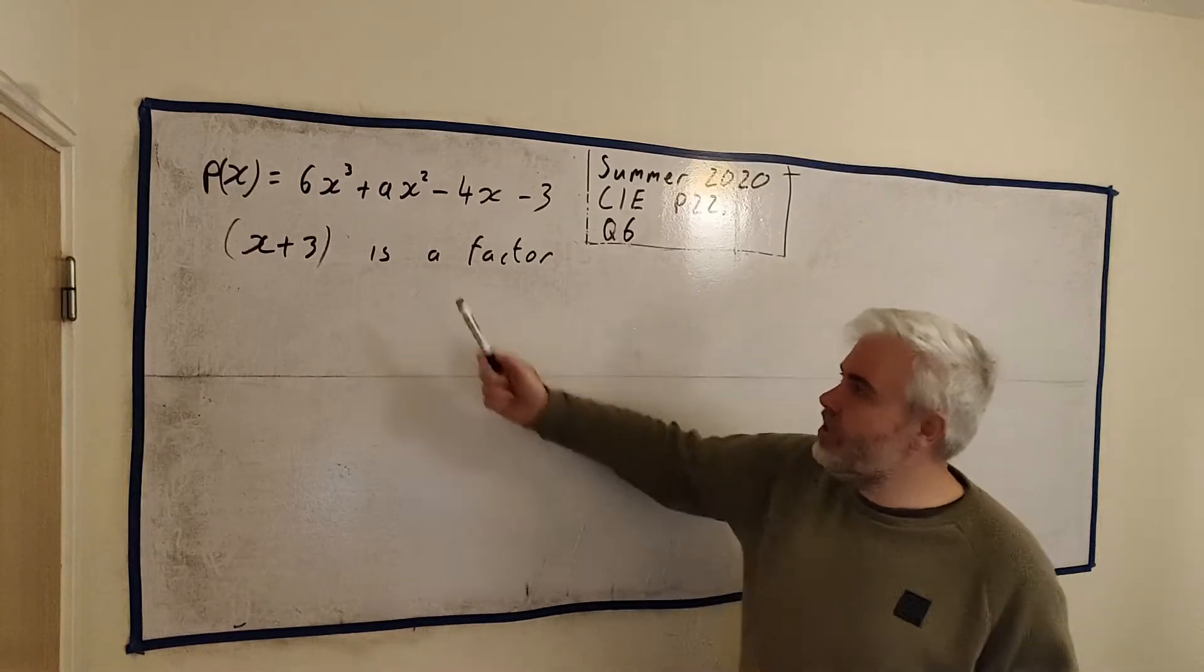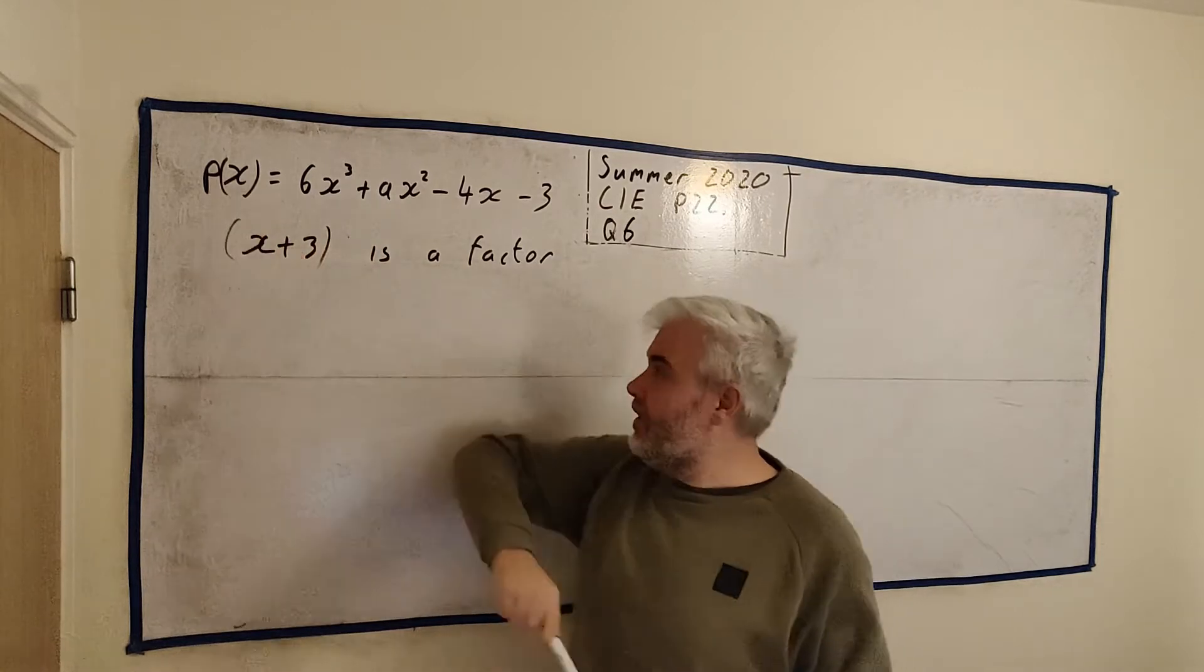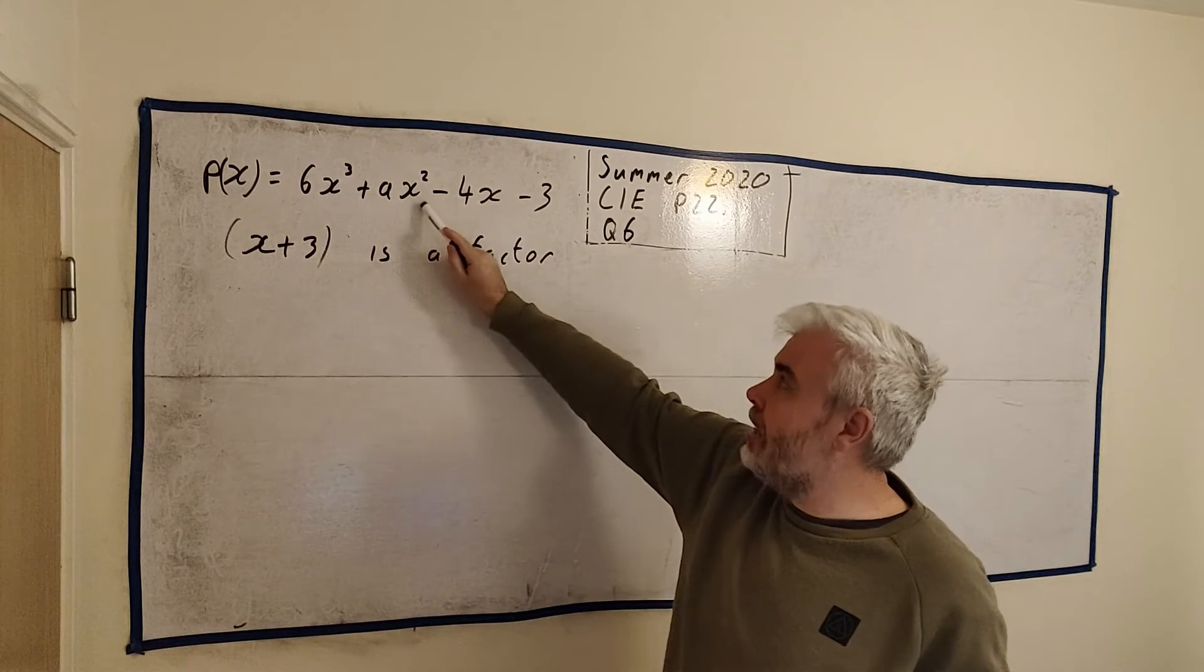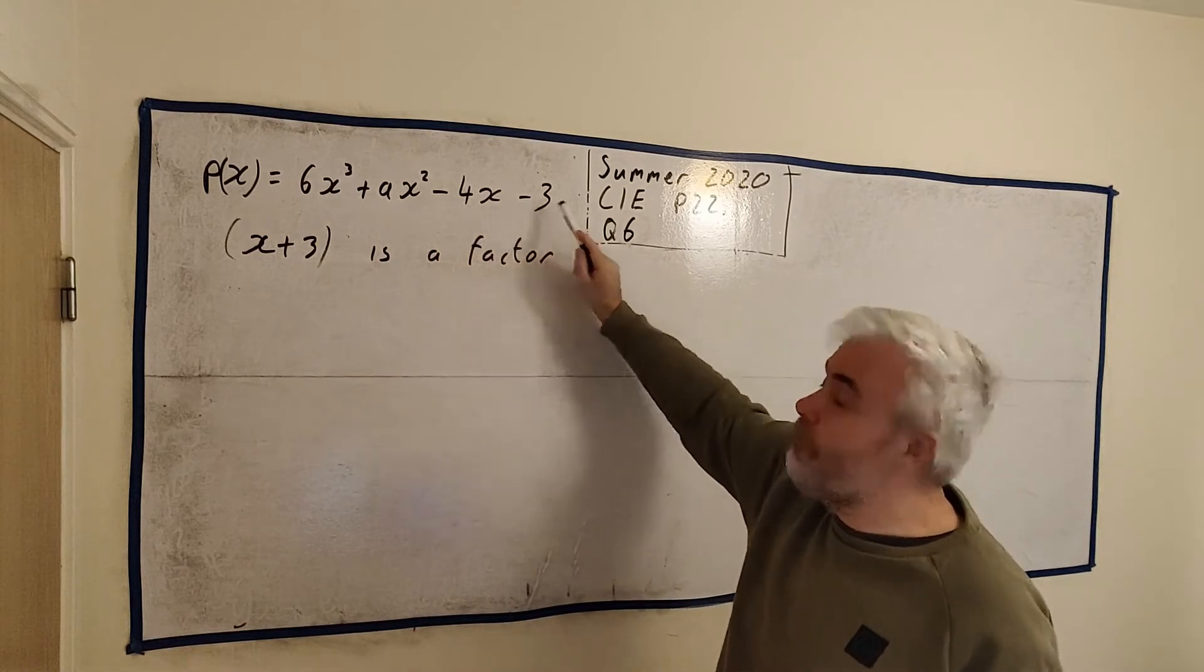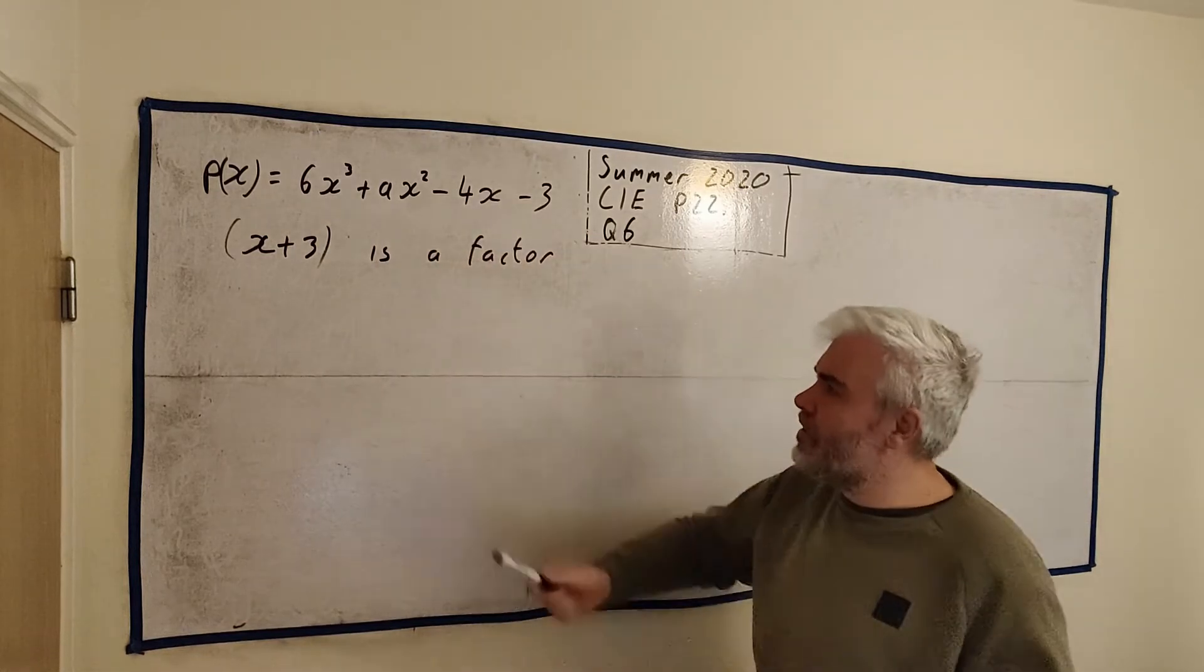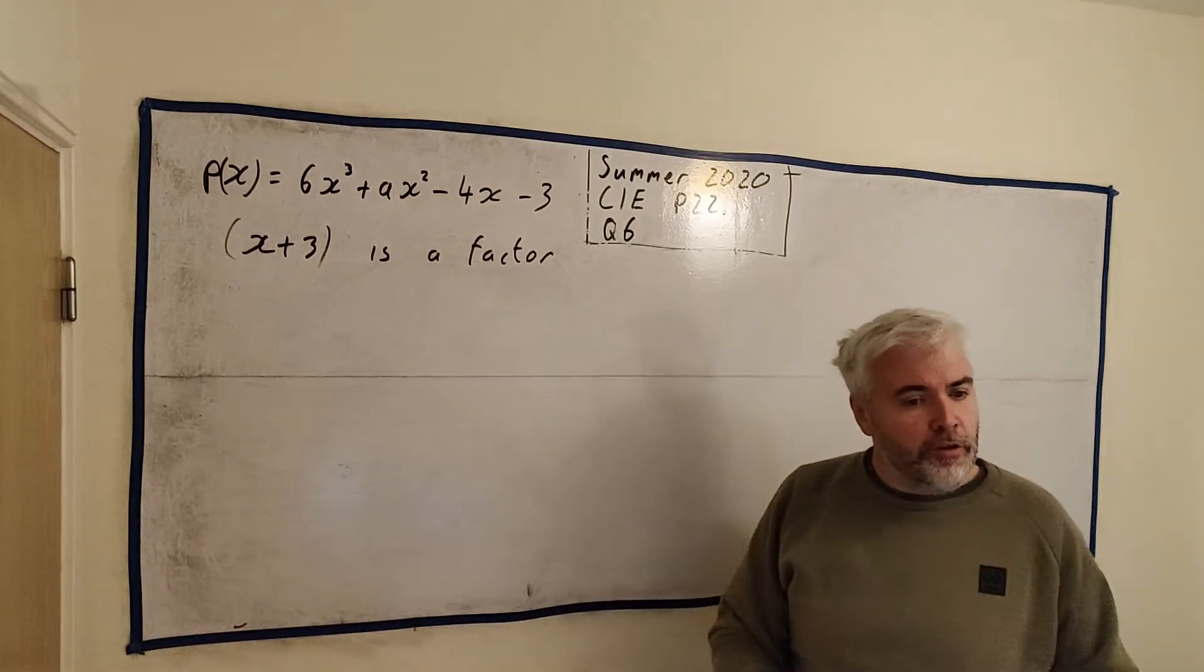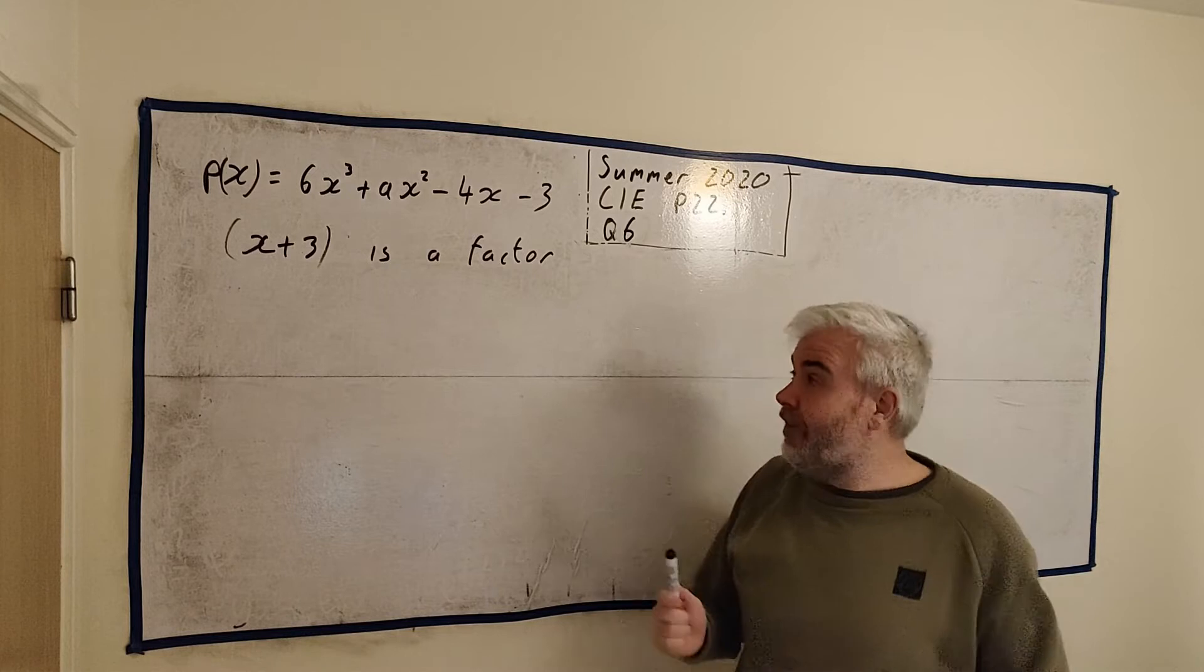In this question they give us a polynomial here, px, and that polynomial is 6x cubed plus ax squared minus 4x minus 3. They also tell us that x plus 3 is a factor of this polynomial. And the first question they ask us then is to find the value of a.